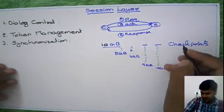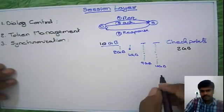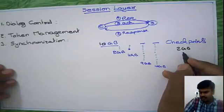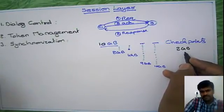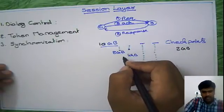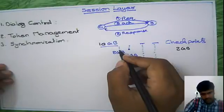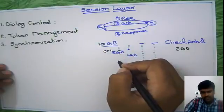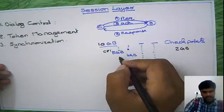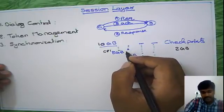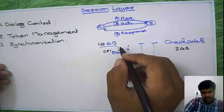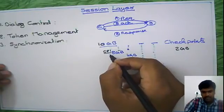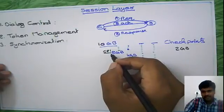For every 2 GB you keep a checkpoint — after downloading 2 GB of data it will put a checkpoint there, Checkpoint 1, and then continue downloading. Assume that at 3 GB it loses the connection. Next time when you get the connection, it is not going to download the data from the first byte onwards — it starts from 2 GB onwards, because it kept the last checkpoint.